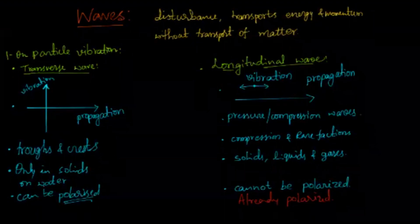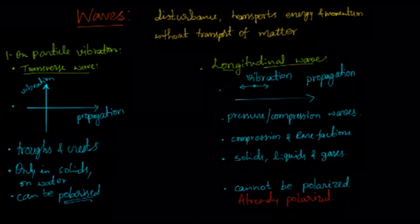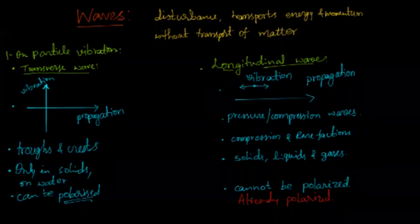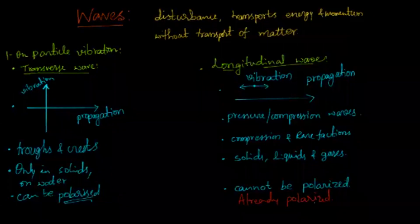Longitudinal waves are possible in solids, liquids, and gases, whereas transverse waves are possible only in solids and on liquid surfaces. Since longitudinal waves move along the direction of motion and all particles move in that same direction, they cannot be further polarized — they are already polarized. Similarly, transverse waves in unidirectional motion are already polarized and can't be polarized further.